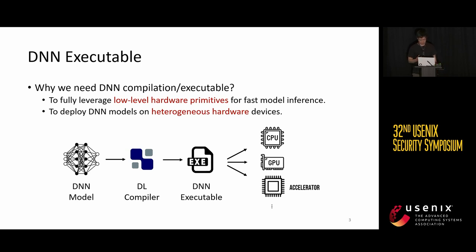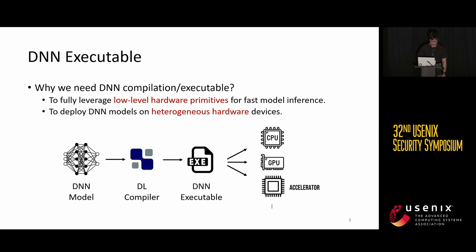Why do we want to compile a DNN model into a DNN executable when we already have mature deep learning frameworks like PyTorch and TensorFlow? The main reason is that as DNN models are getting more and more popular, sometimes we may want to deploy them on heterogeneous hardware devices — not only devices with powerful GPUs, but also low-power devices such as IoT devices, Azure devices, and smart wearable devices. In that case, we want to leverage the performance potential of a specific hardware device, and the latest solution is to compile a DNN model into a DNN executable running directly on the hardware.